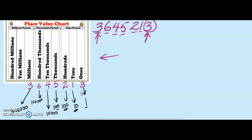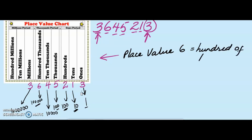Now, if we were asked what is the place value of the digit 6, the place value of the 6 is going to be hundreds of thousands. So we can write 100 of thousands, or we can write 100,000. Both are equally correct.